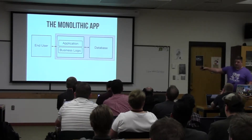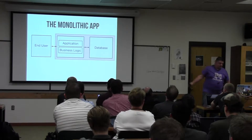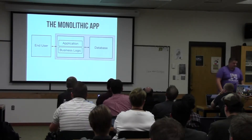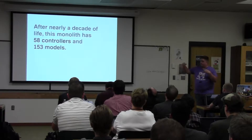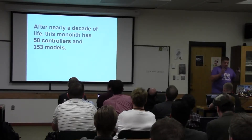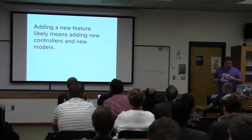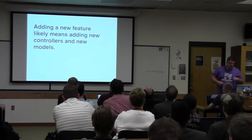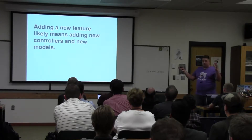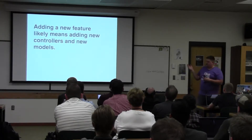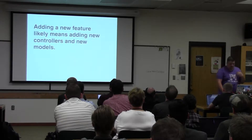That works for a long time — it worked for the application I work on for about 10 years. This isn't a bad architecture. But you reach a point where you can look at this and say maybe there's a problem. After a decade of life, I counted 58 controllers in one of our apps and 153 models. Every time you want to add a feature, you have to add new controllers and new models. Over time this application just keeps growing until you have 10 million lines of code, and developers are saying, I guess this is a model function — and you end up with something almost impossible to work on.